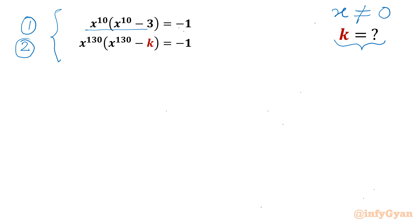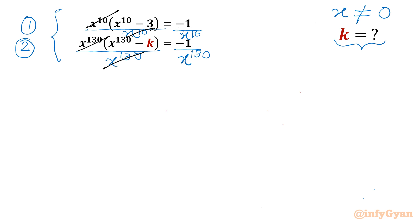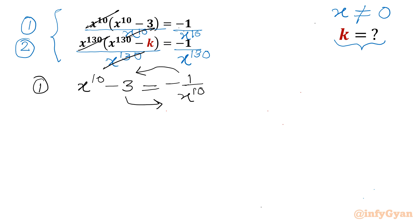Now I will divide both sides by x^10 in equation 1 and x^130 in equation 2. I will cancel x^10 from equation 1 in the numerator and denominator. So I can write equation 1 as: x^10 minus 3 equals minus 1 over x^10. Taking the term to the LHS and minus 3 to the RHS gives x^10 plus 1 over x^10 equals 3.